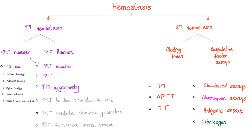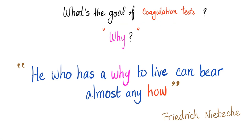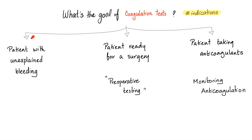This explanation assumes you have watched the previous videos. What is the goal of coagulation testing? The indications: if a patient has unexplained bleeding, we do coagulation tests. If a patient is ready for surgery, we need preoperative testing to ensure they can coagulate — otherwise bleeding could be fatal. If a patient is taking an anticoagulant, we monitor their response to determine if we are giving too much or too little.